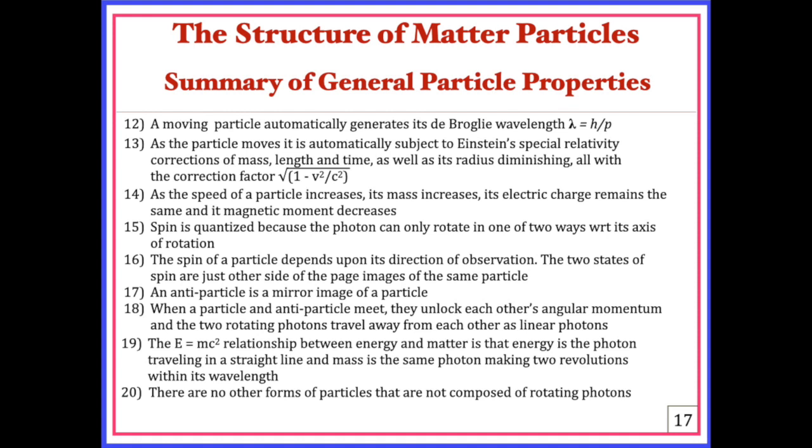The following presents the structure of an electron as a photon of the appropriate energy making two revolutions per wavelength. It comes with all the appropriate properties like charge, magnetic moment, mass, spin, dimensions, the de Broglie wavelength, special relativity corrections, and chirality inbuilt. Before that can be done, it is necessary to list some of their measured properties.